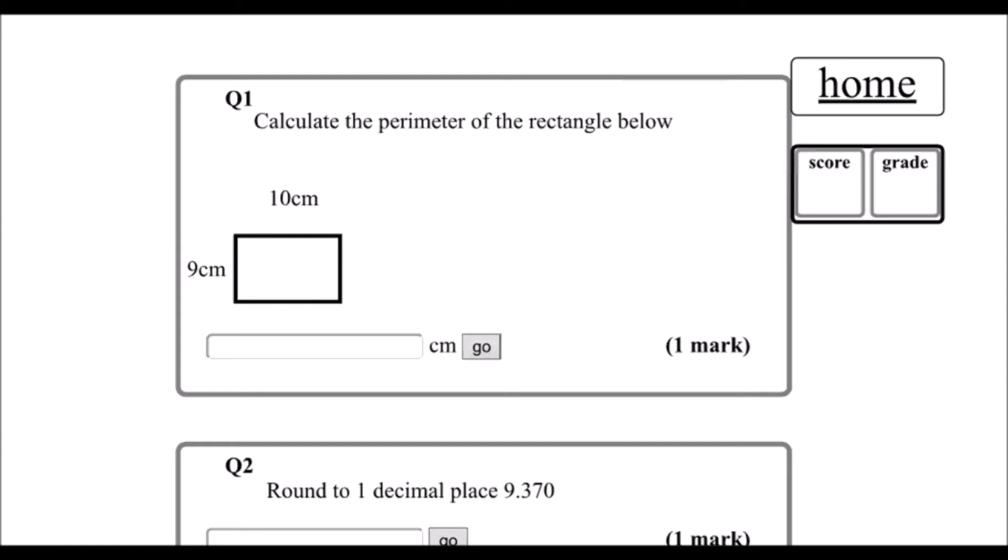Question 1. Calculate the perimeter of the rectangle below. In a rectangle, the two opposite sides are equal. So we've got two 10cm lengths and two 9cm. The perimeter is all of the lengths added together. So it's 10 plus 9 plus 10 plus 9, and you can do that in the calculator, and we should get 38cm.